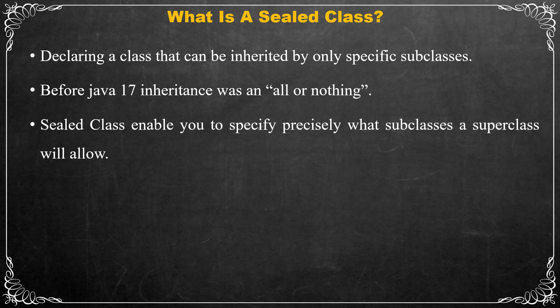Sealed classes fall between these two extremes because they enable you to specify precisely what subclasses a superclass will allow. It is also possible to declare a sealed interface, in which you specify only those classes that implement the interface and/or those interfaces that extend the sealed interface.